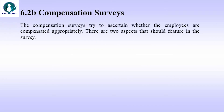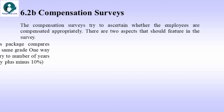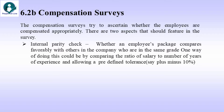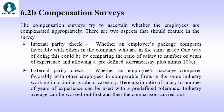The compensation surveys try to ascertain whether the employees are compensated appropriately. There are two aspects that should feature in the survey. First, internal parity — checking whether an employee's package compares favorably with others in the company in the same grade. One way of doing this is by comparing the ratio of salary to number of years of experience, allowing a predefined tolerance, say plus or minus 10%. Second, external parity — checking whether an employee's package compares favorably with employees in comparable firms in the same industry working in a similar grade or category. The ratio of salary to years of experience can again be used, with industry average worked out first and then the comparison carried out.